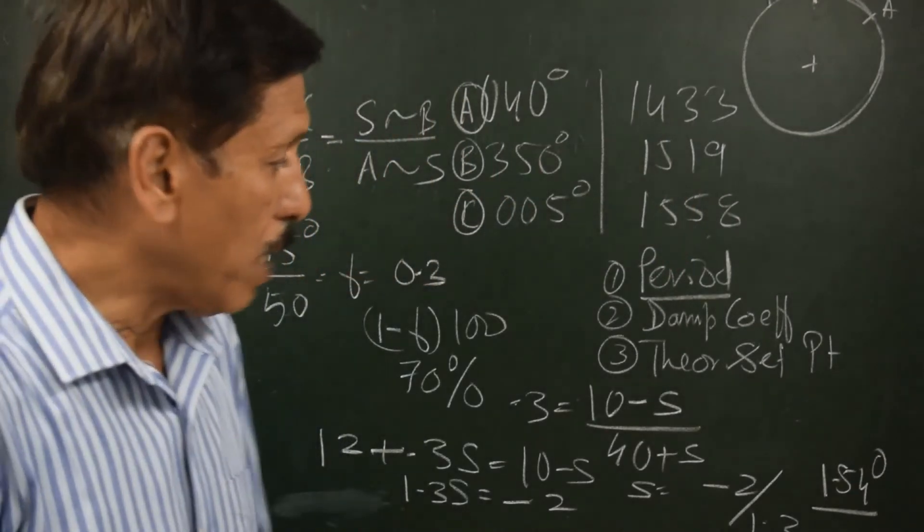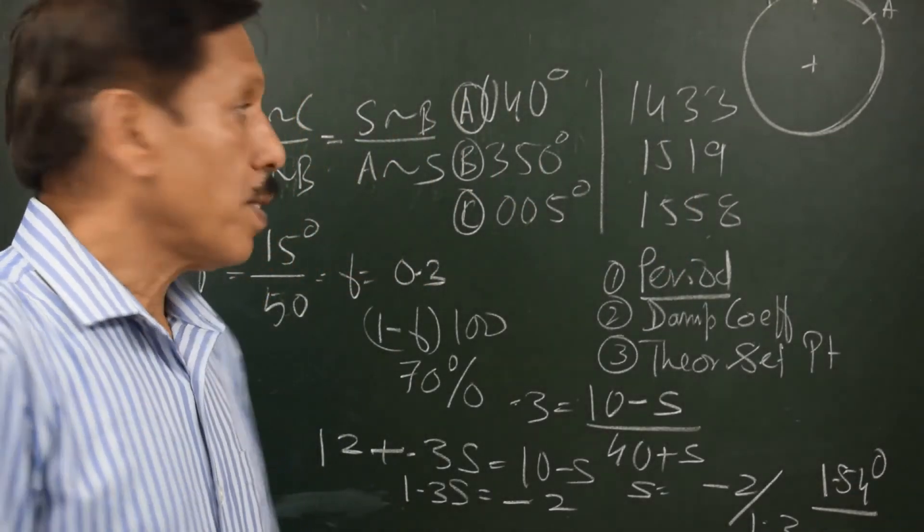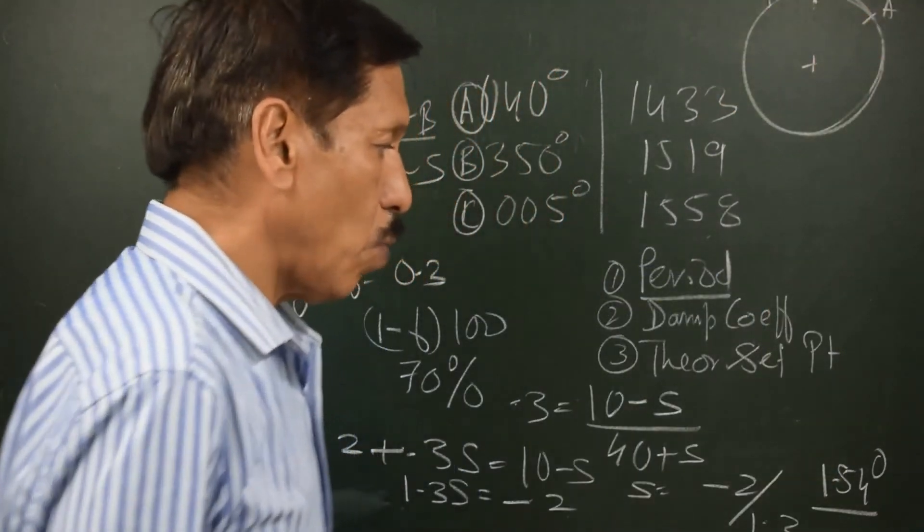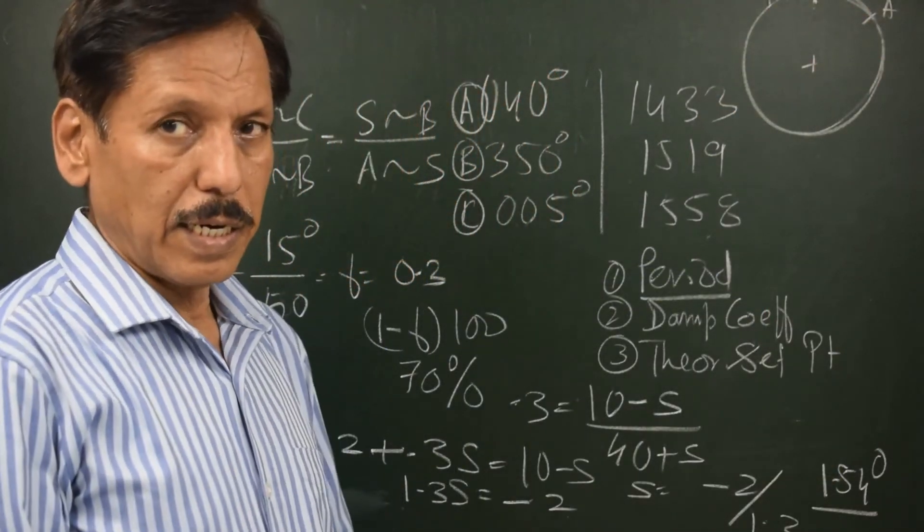Because I got negative sign, the settling is now on this side, settling is on the other side of 0. So, 1.54 degrees is the settling position.